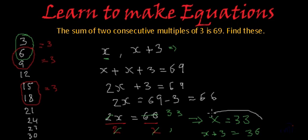So 33 and 36 are the two consecutive multiples of 3 whose sum is 69. See, 6 plus 3 is 9, 3 plus 3 is 6. So 33 plus 36 gives us 69 and they are the multiples of 3. So this is our solution and this was the equation.